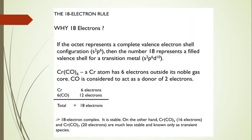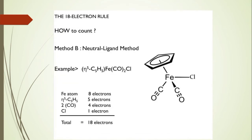Our first example is Cr(CO)₆. The central atom chromium has 6 electrons, and each CO ligand donates 2 electrons to the central atom. The total electron count reaches 18 electrons, so the complex is stable.